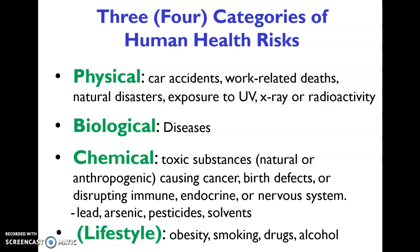The third category is chemical, and we look at that a lot in environmental science. We want to know whether substances, whether natural or anthropogenically occurring, are toxic. The ways in which they're typically toxic is to cause cancer, birth defects, disrupt the immune system or the endocrine system, or disrupt the nervous system. We've already talked about how things like lead, arsenic, pesticides, and solvents affect these various systems — for example, lead causing damage to the nervous system, which makes children have lower IQs and may even lead to more violence.